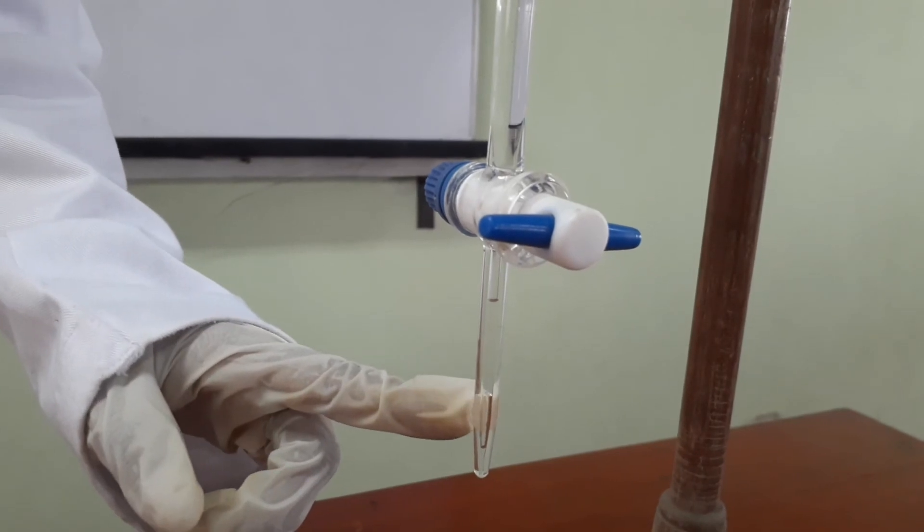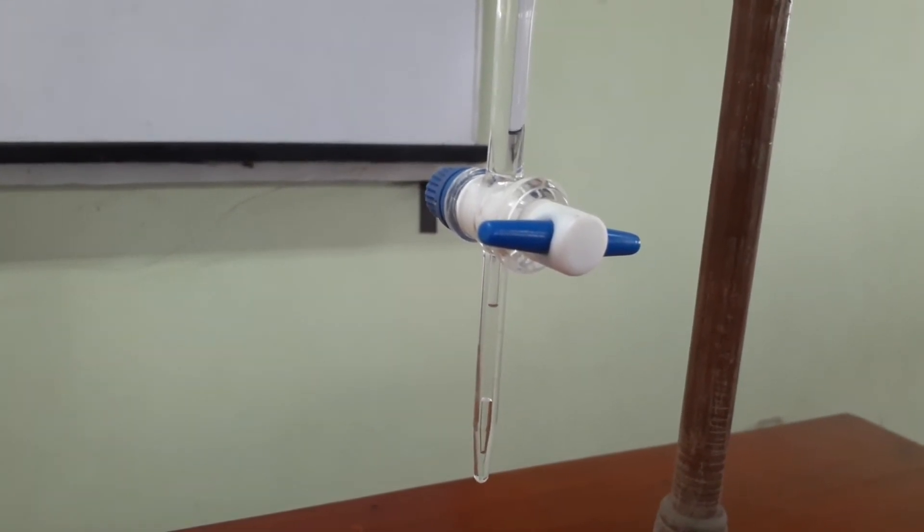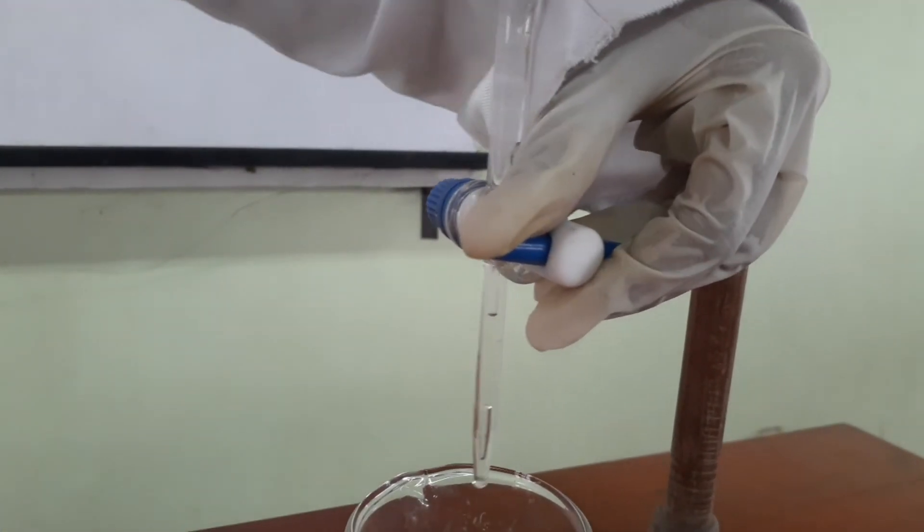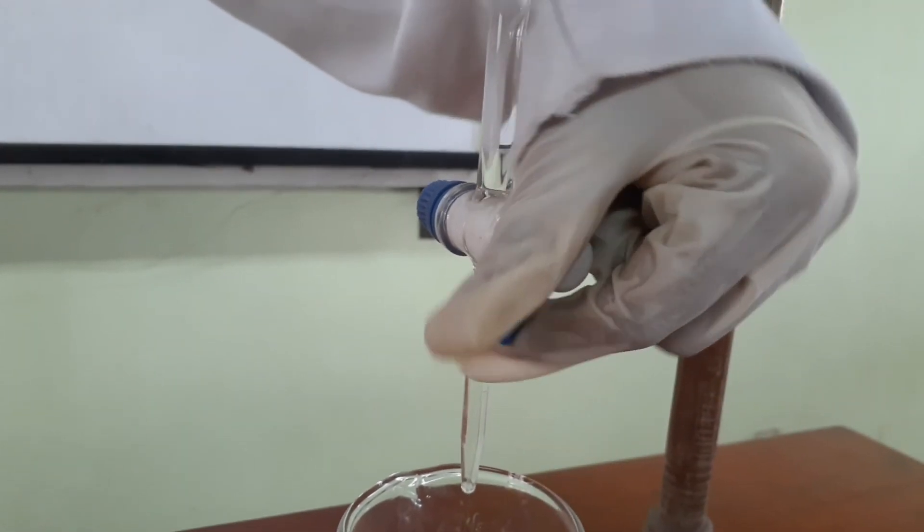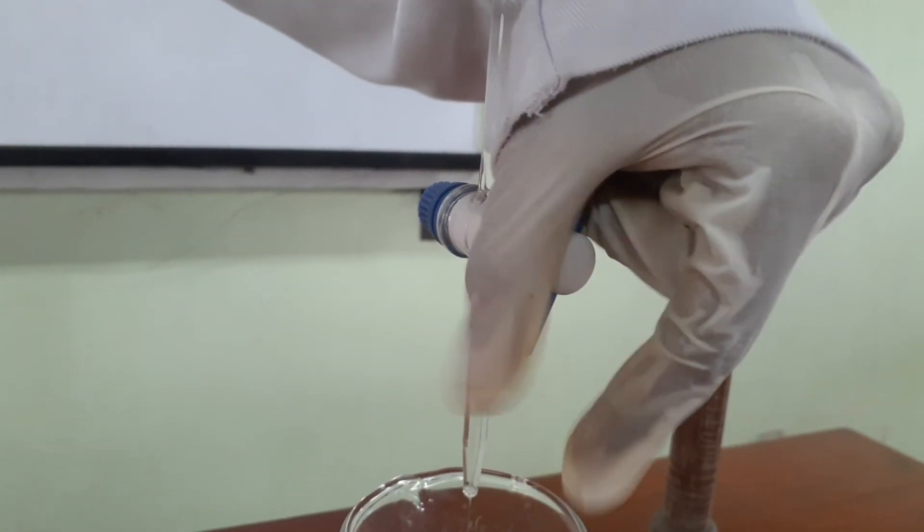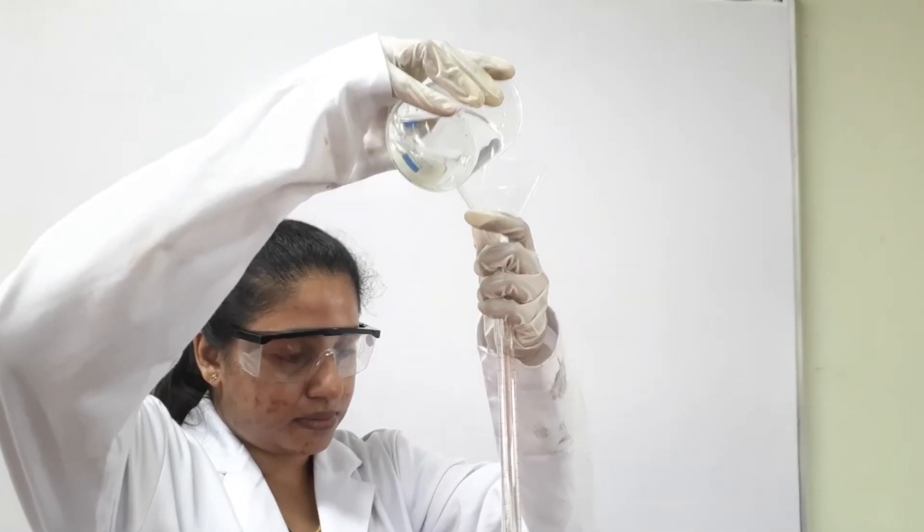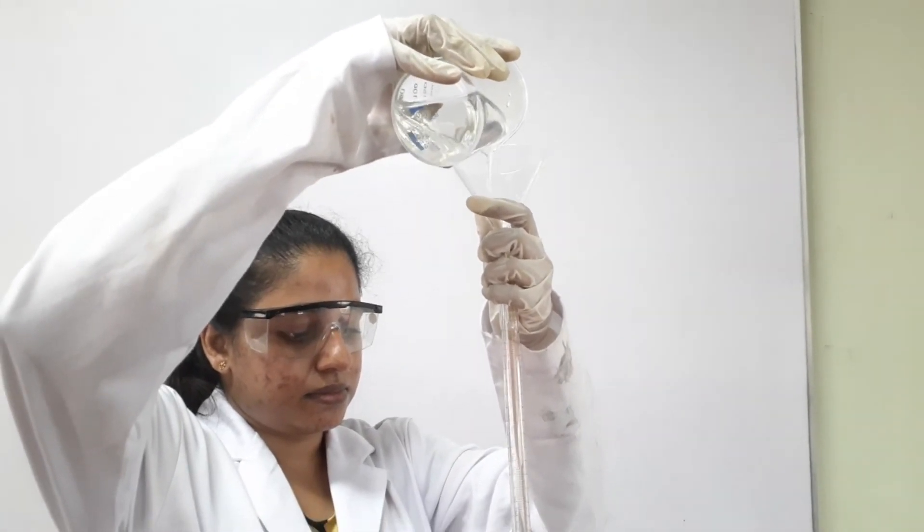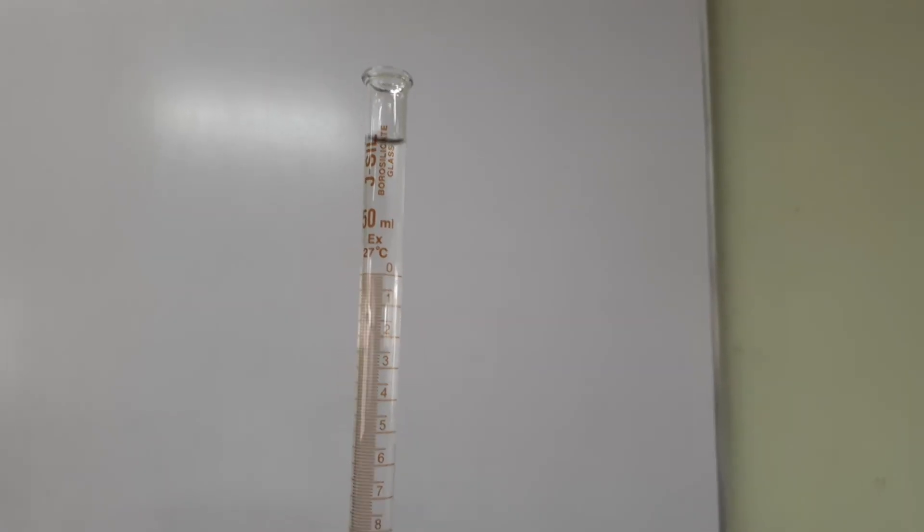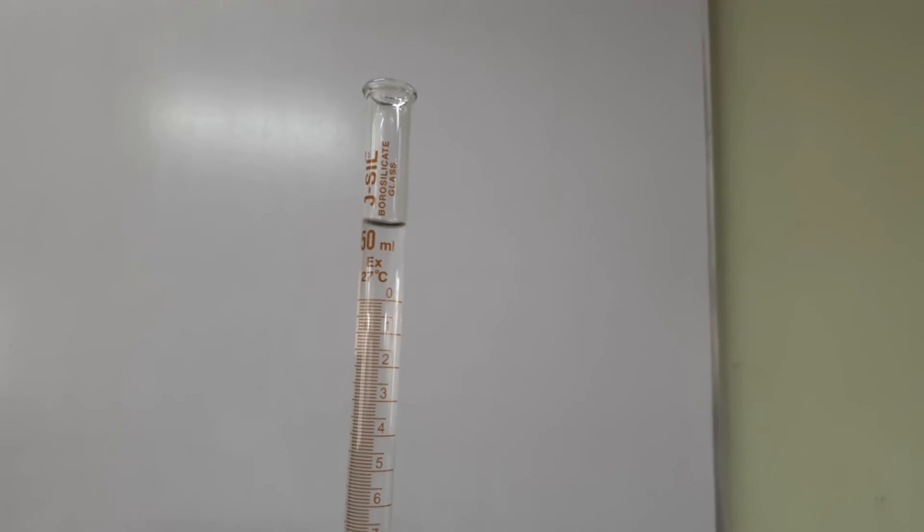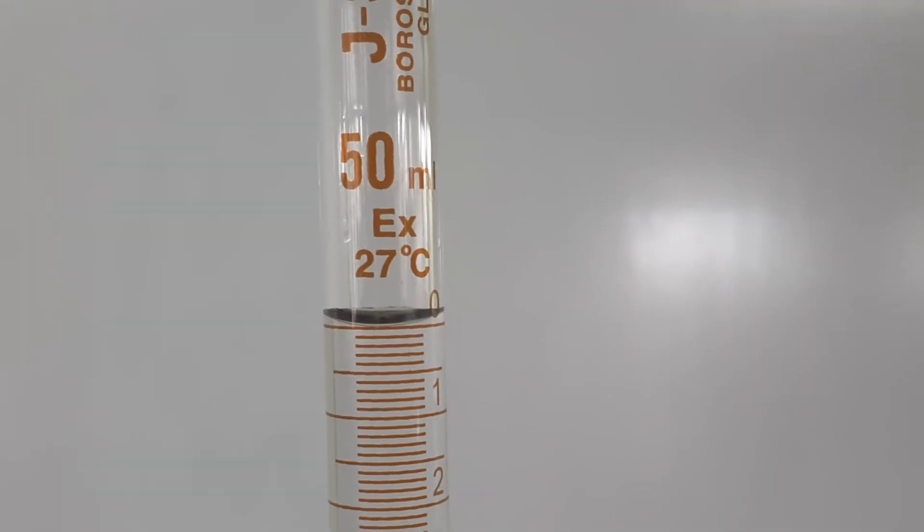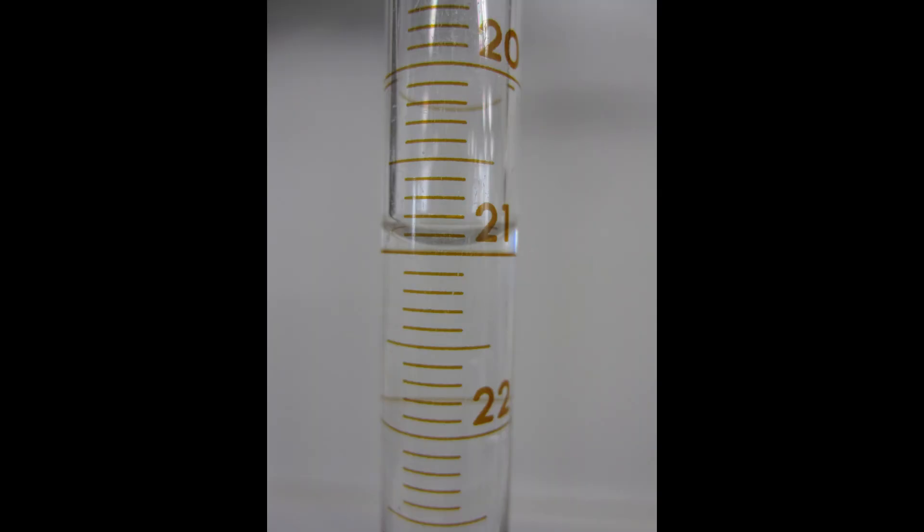If there are any bubbles in the burette, we need to remove them by turning on and off the tap very quickly. Once air bubbles have been removed, the burette is refilled with solution. At this point, the burette tap is opened and we let the solution run out until the lowest part of the meniscus is level with the 0 graduated mark. We always read a value at the lowest level of the curve. Here the reading is 21 ml.